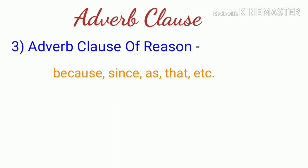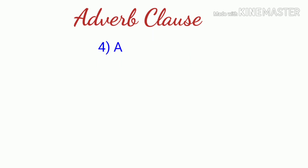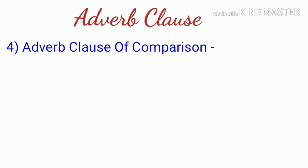The next type is adverb clause of reason, showing cause or reason. It is introduced by conjunctions like 'because.' For example: 'He doesn't like it because he doesn't know it' - 'because he doesn't know it' gives the reason, so it is an adverb clause of reason.